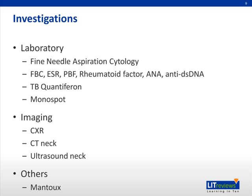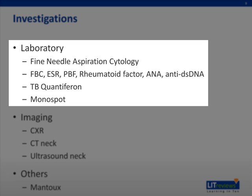The investigations performed depend on the suspected cause. If there is an obvious cause like acute tonsillitis, then no further diagnostic laboratory investigations or imaging is necessary. Often a fine needle aspiration cytology is performed. In infective cases, a full blood count and an erythrocyte sedimentation rate can be checked. In suspected autoimmune cases, peripheral blood films, rheumatoid factor, antinuclear antibody, and anti-double-stranded DNA antibody can also be checked. Suspected tuberculosis cases can have their TB quantiferon taken, and suspected infectious mononucleosis cases can have a monospot done.